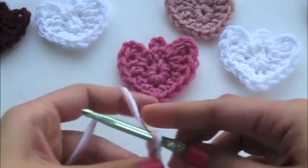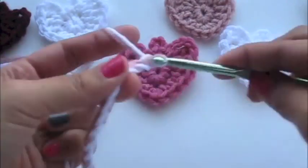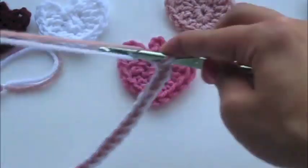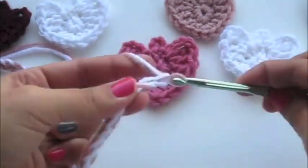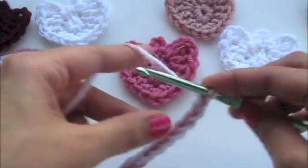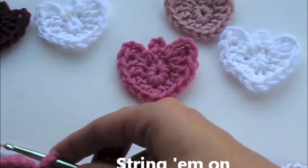And if you notice in the background, I have my hearts and some of them are a little bit bigger than the others. So the smaller ones are made from the size I hook that we use today. And the ones that are slightly bigger is size K hook. It's two sizes up. And then I just did that because I wanted to have them be a little bit different.